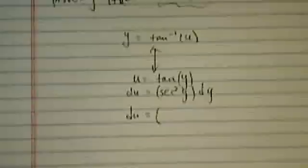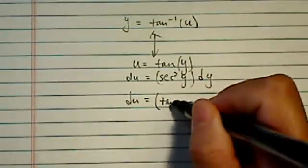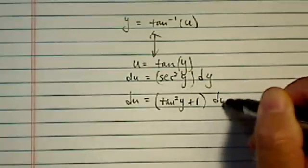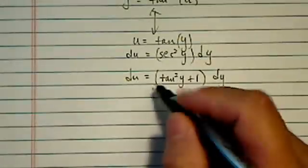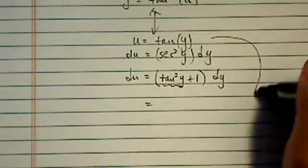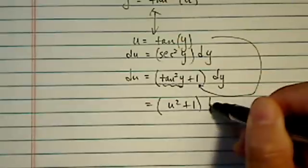Now, what happens over here? Secant squared equals tangent squared y plus 1, dy. Okay? Now tangent y, we already had that from this earlier part. This becomes u squared plus 1 dy.